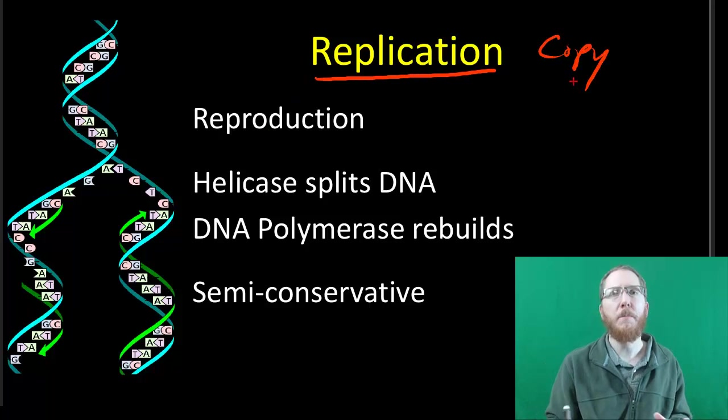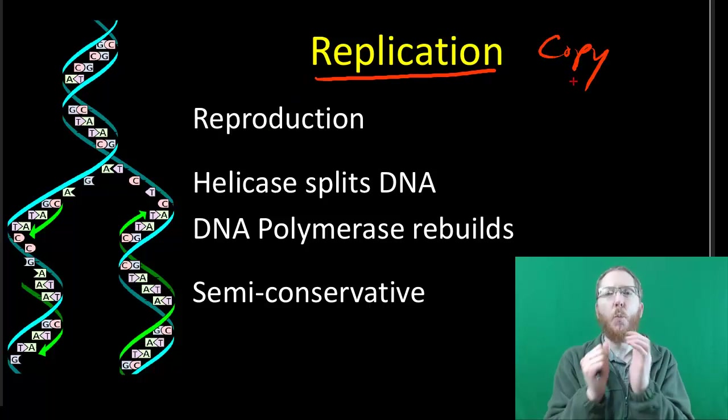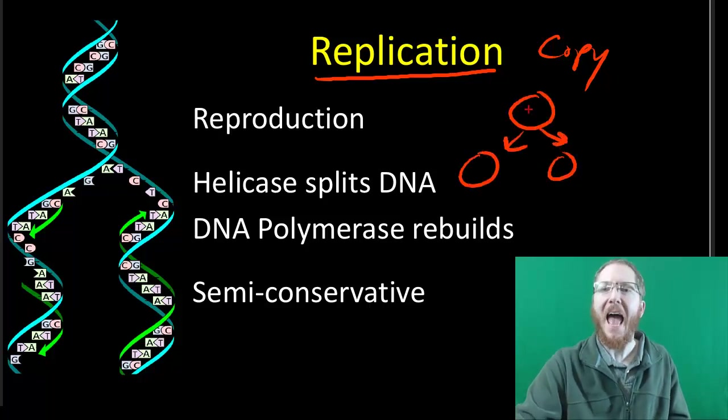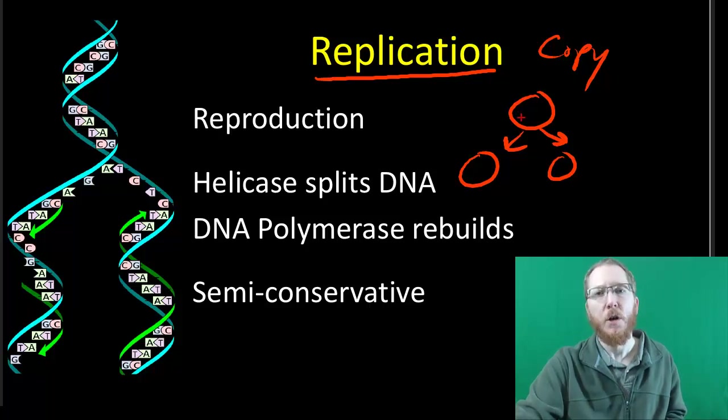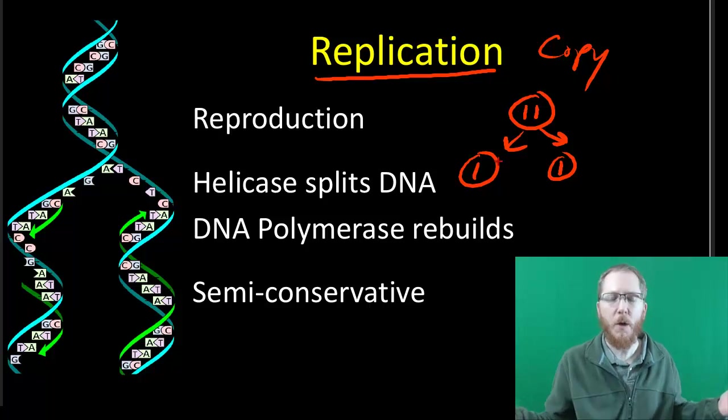If you want to reproduce at some point, you have to have two copies of your DNA, because one cell is going to split and become two new cells. And each of these new cells has to have a copy of the DNA or else they can't survive. So we at some point have to take our one copy of DNA and make it two, so that each new cell has its own copy.